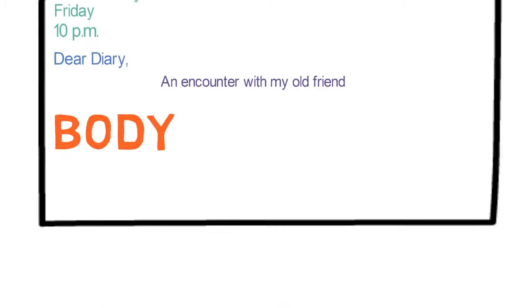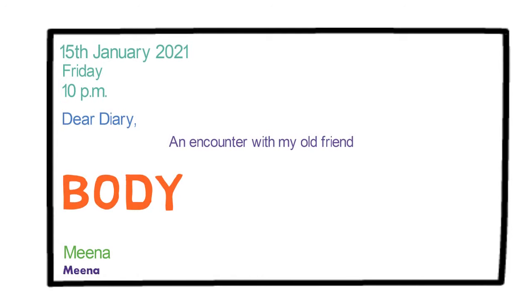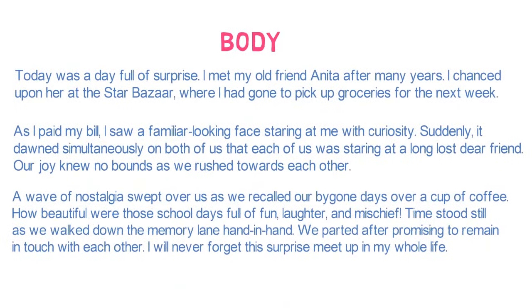Then comes the name: Meena. And at the end, a signature of Meena. Notice how we have added all 8 points in our diary entry. So finally, we have the whole diary entry with us. Pause the video and check it properly.